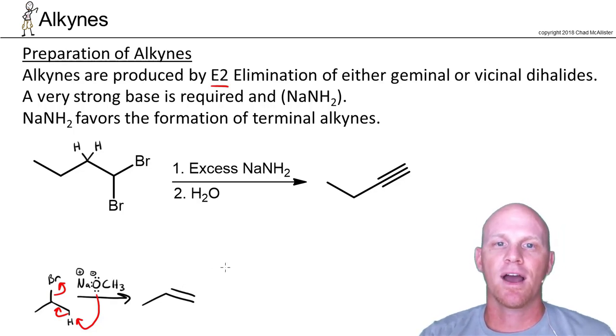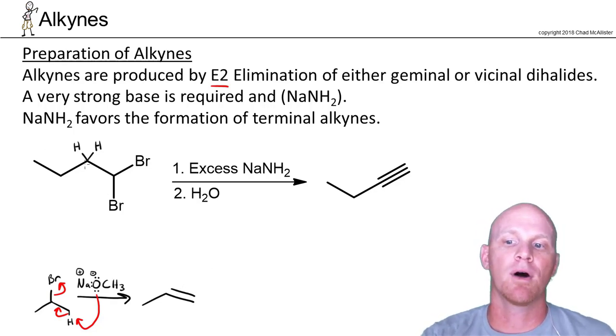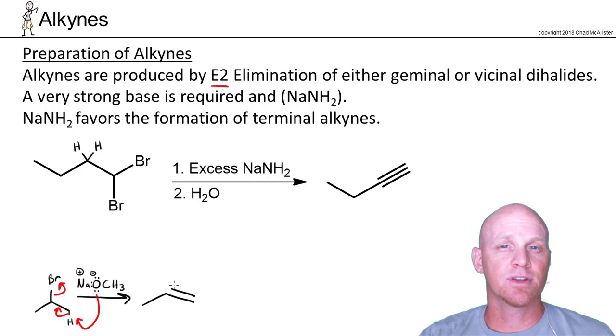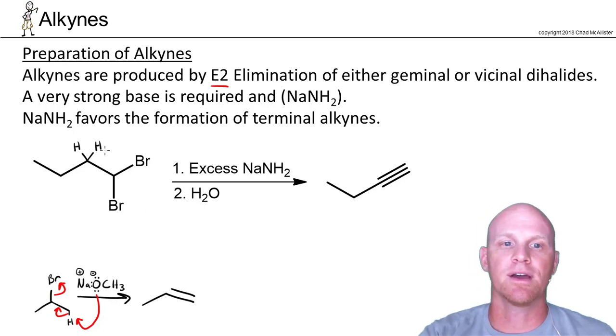Well in this case to make an alkyne we actually want to make two pi bonds, not just one. It turns out the first step would be okay with the traditional strong bases we've been using, but the second step which would start with the alkene wouldn't work. We need a stronger base.